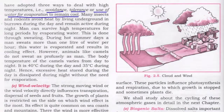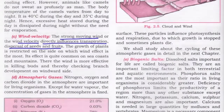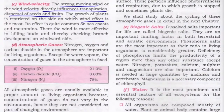Wind velocity — strong moving wind or wind velocity directly influences transpiration and the dispersal of seeds and fruits. Where there is wind effect, the growth of plants is affected. This is quite common on sea coasts and mountains.